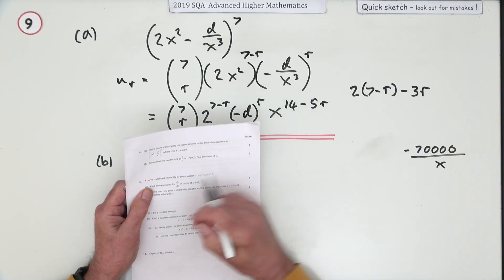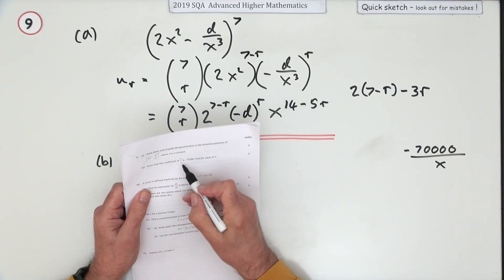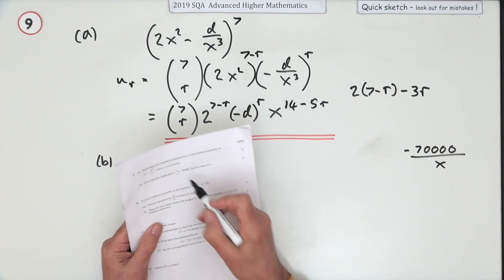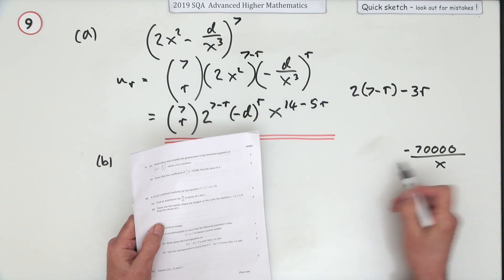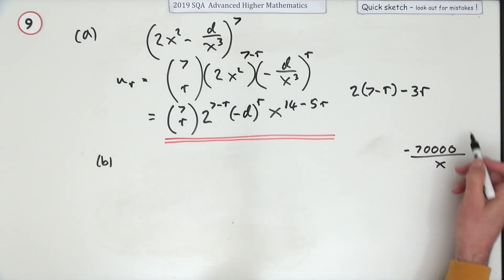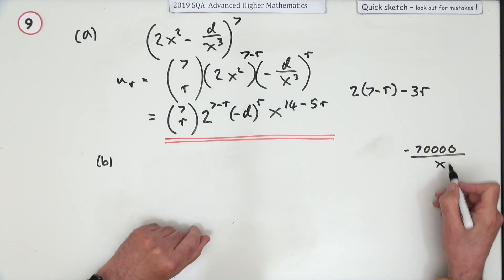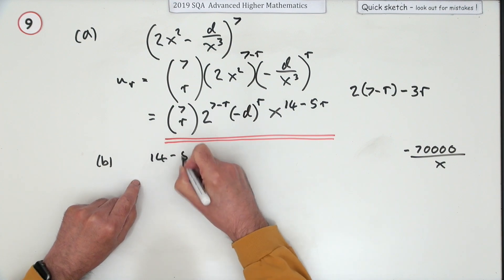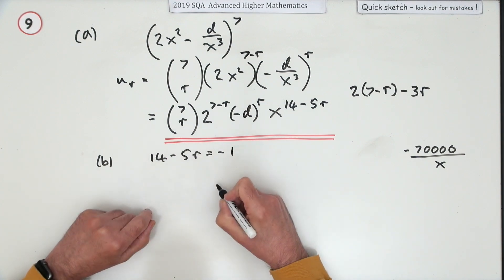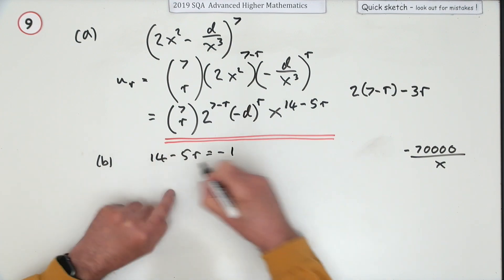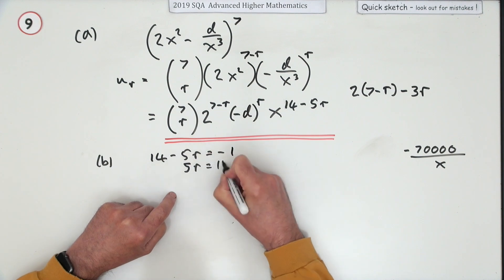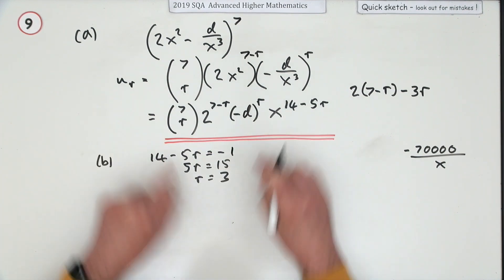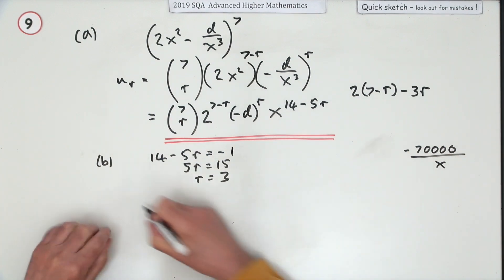Part b: given that the coefficient of 1/x (i.e., x to the power negative one) is negative 70,000, find the value of d. If that's the case, then the power 14 minus 5r must equal negative one. So 5r equals 15, and r equals 3.